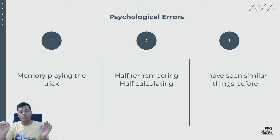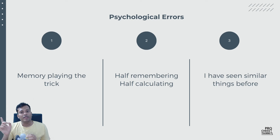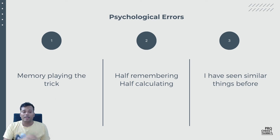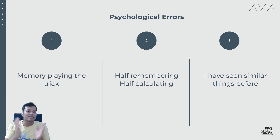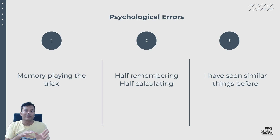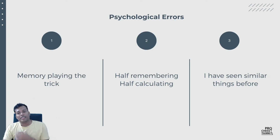Psychological errors. This is very common and happens in the opening, middle game, and endgame. Memory playing tricks — you think you are playing out of memory, but maybe there is a minor difference. You prepared a line where the queen always went to f6, but maybe there's a slight change and now it goes somewhere else, yet you play it anyway. You will see strong players making devastating blunders right in the opening. Then, half remembering and half calculating — you saw a pattern somewhere, so you're partly remembering and partly calculating, neither here nor there. As a result, blunder.